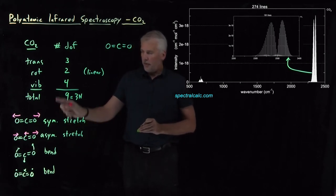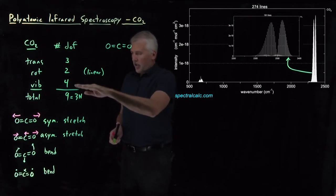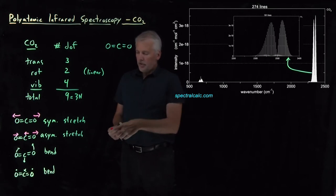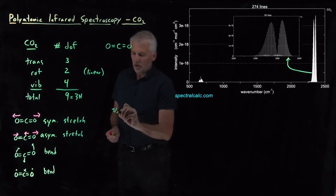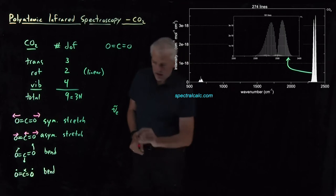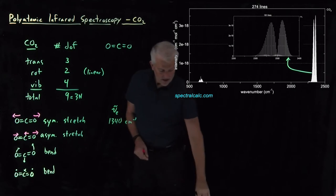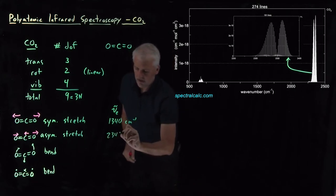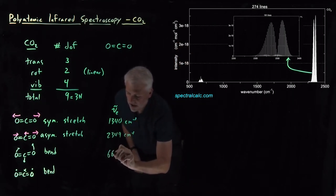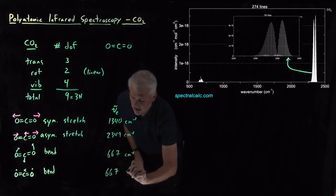Those all together are the four different vibrational motions that the CO2 molecule exhibits, and we know there aren't any more because we can count the number of vibrations. Each vibration has its own characteristic frequency. The symmetric stretch is 1340 wave numbers; the asymmetric stretch is about 2350 wave numbers. The two different bends, as you might guess, are degenerate — they have the same frequency as each other because they're the same motion just in different directions.